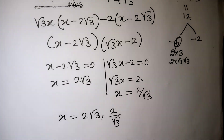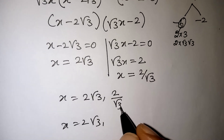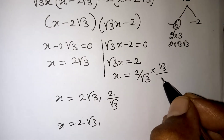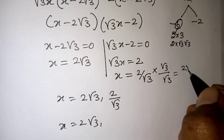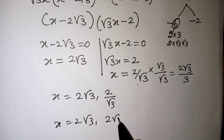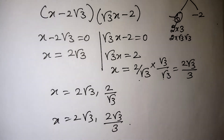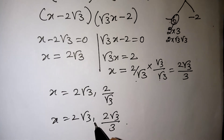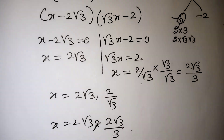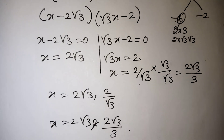Having root 3 in the denominator is not standard form, so we multiply and divide by root 3: 2·root 3 / (root 3 × root 3) = 2·root 3 / 3. So the two zeros are x = 2·root 3 and x = 2·root 3 / 3. Those are your correct solutions. Thank you for watching — subscribe to our channel for more videos.